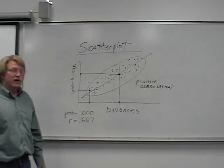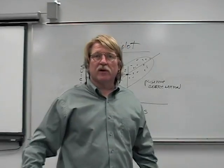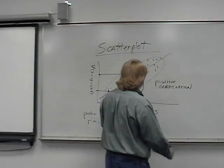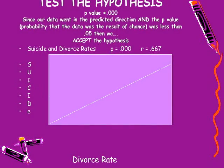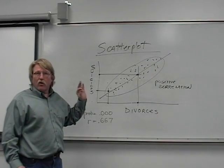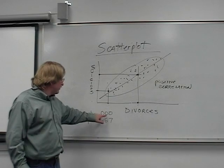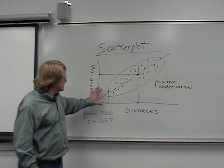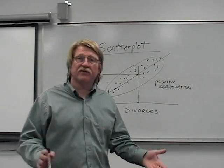Let's turn this into a hypothesis. Our hypothesis would be: as suicide rates go up, divorce rates are going to go up. We collect our data, get this scatterplot, and it does seem to be true. Does the data go in the direction our hypothesis predicted — do divorces go up as suicides go up? Yes, they do. Is the probability .05 or less? It's a lot less than .05, meaning out of a thousand studies, we would never find this relationship by chance even one time. This is a significant correlation, so we accept our hypothesis.